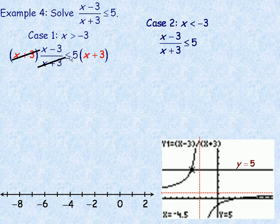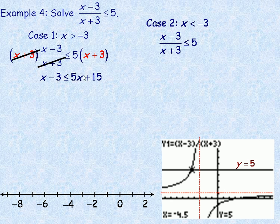So the inequality does not change direction — it does change direction when you multiply or divide by a negative. So I have x minus 3 on the left, which is less than or equal to, and expanding 5 times x plus 3 gives 5x plus 15. Rearranging, I subtract 5x from both sides, so x minus 5x is negative 4x, and I add 3 to both sides, giving 15 plus 3 equals 18.